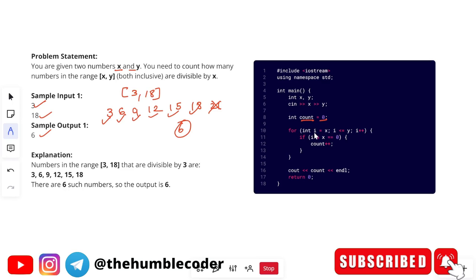And then we are running a for loop. We will run from i equals to X, which means from 3, to less than or equals to Y, which means 3 to less than or equals to 18. And then every time what we will do, we will do a check that whatever the number that we have is divisible by X or not.